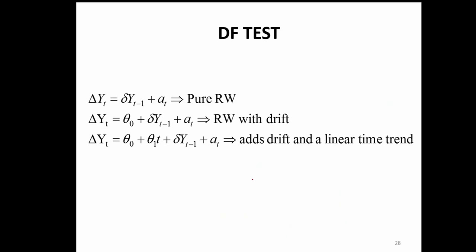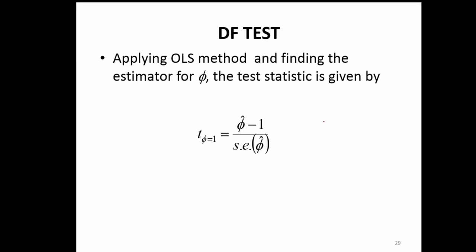There are three types of Dickey-Fuller test we can do depending on the kind of random walk we are trying to understand. The first case is a pure random walk — there is no drift, no theta term; it is just the past value of yt, and we would like to know if the coefficient is 0 or not. In the second case, we have a drift. And in the third case, we have a drift and also a deterministic time component — theta naught plus theta 1 times t — which is the deterministic linear trend. So, it is a combination of deterministic and stochastic trend. We can do all three and see which one is best for the given time series data.